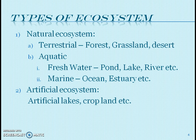In freshwater, we can consider pond, lake, and river ecosystems, whereas in the marine ecosystem, we can consider oceans and estuaries. The next type is artificial ecosystems. There are different types of artificial ecosystems — the first one is artificial lakes and ponds, and the second one is croplands.